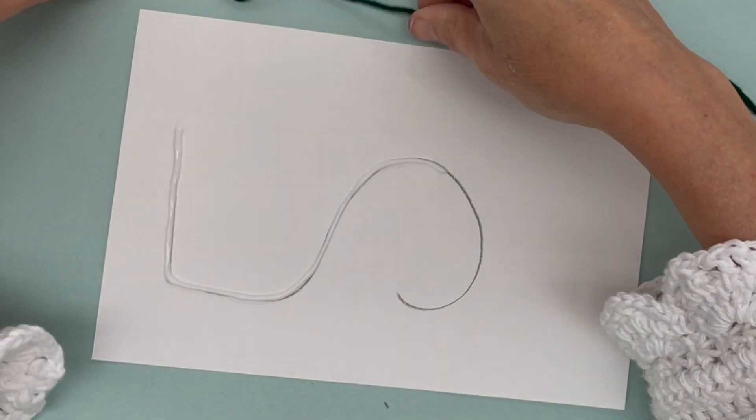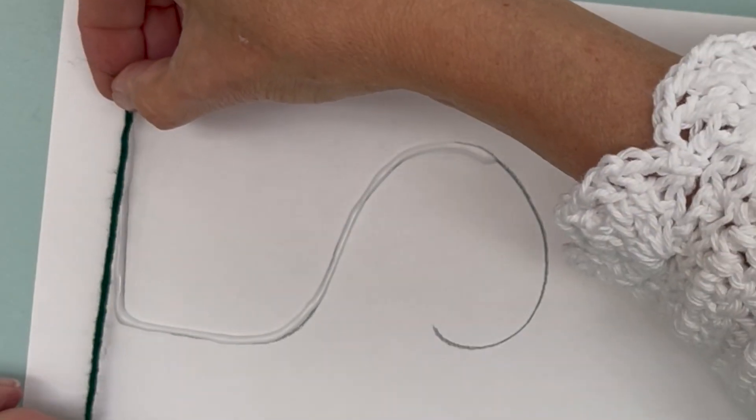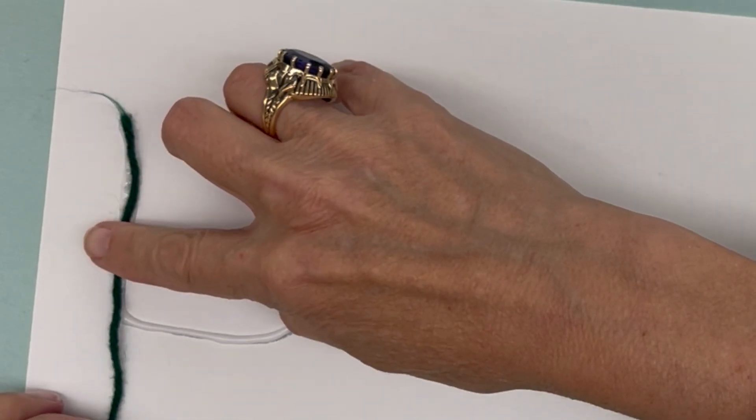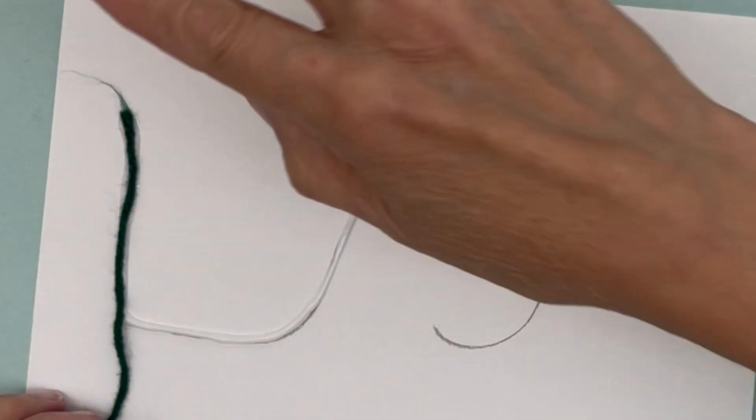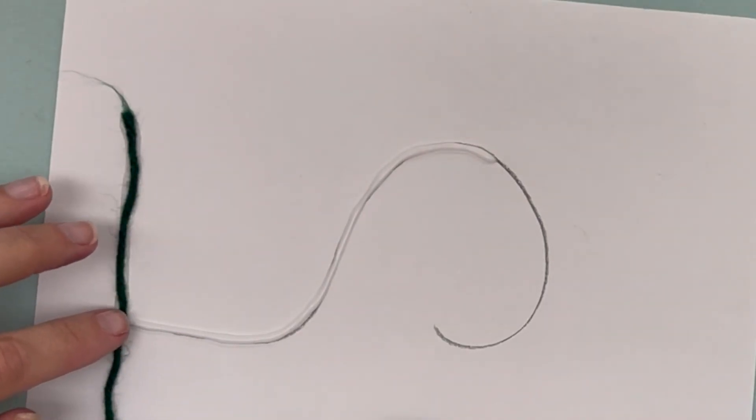The yarn will absorb some of the glue. So I've got my line and I didn't go all the way just in case I run out of yarn. I can always add more glue.